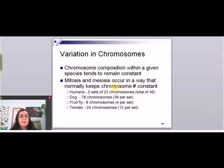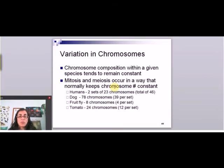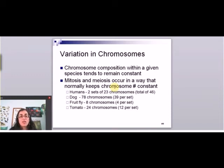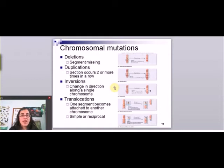Thinking about how mitosis and meiosis occur, they happen in such a way to try and maintain chromosome number. When they happen correctly, they keep the same chromosome content, and meiosis makes sure that egg and sperm can come together and get us back to 46, so humans always have 46. These mechanisms help maintain the correct chromosomes, but there are problems that can happen, and that's what we're going to talk about.